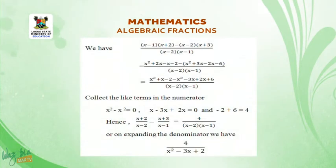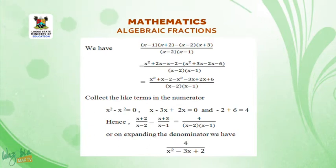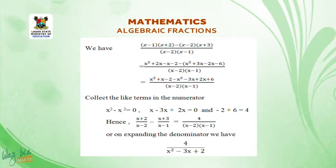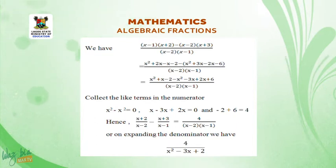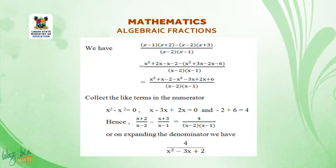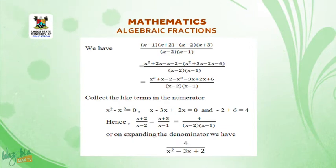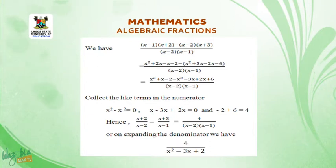We have: (x minus 1)(x plus 2) minus (x minus 2)(x plus 3), all over (x minus 2)(x minus 1), which equals x squared plus 2x minus x minus 2 minus bracket x squared plus 3x minus 2x minus 6, all over (x minus 2)(x minus 1).